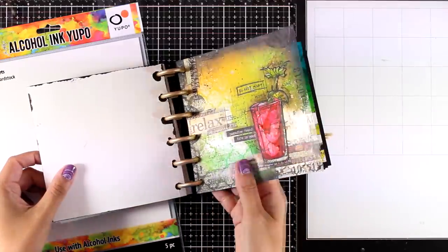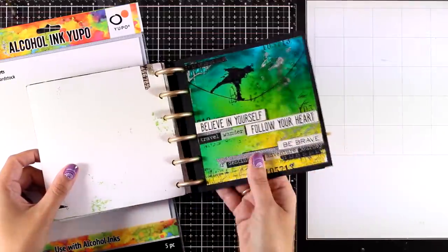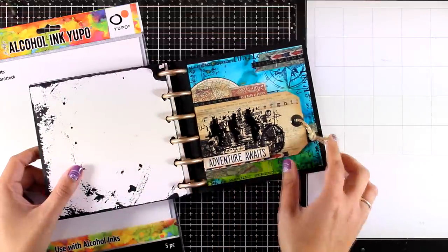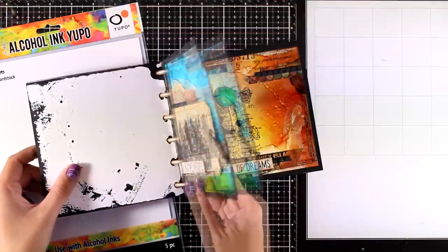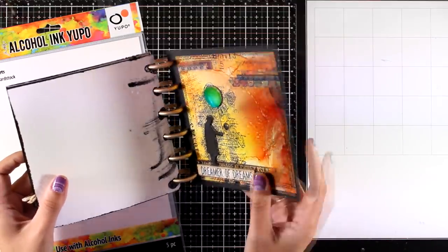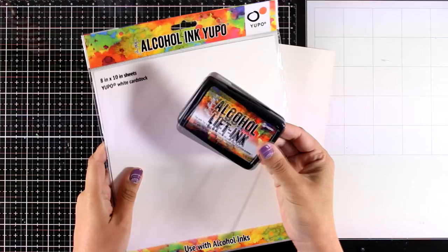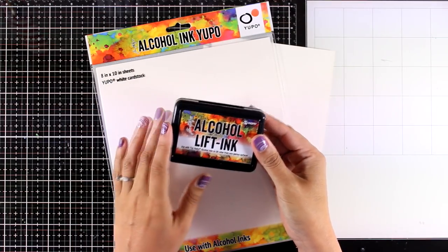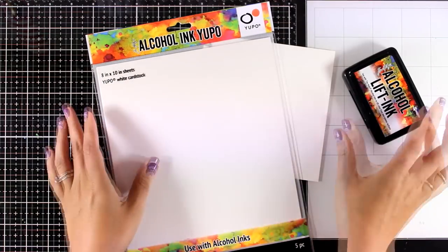Now in the last pages of this book I have been experimenting with alcohol inks for my backgrounds and I absolutely love them, so I decided to play one more time with those. Especially for today I'm going to play with a new tool that I have in my stash which is the alcohol lift ink, and I will show you later on how I'm going to use it.